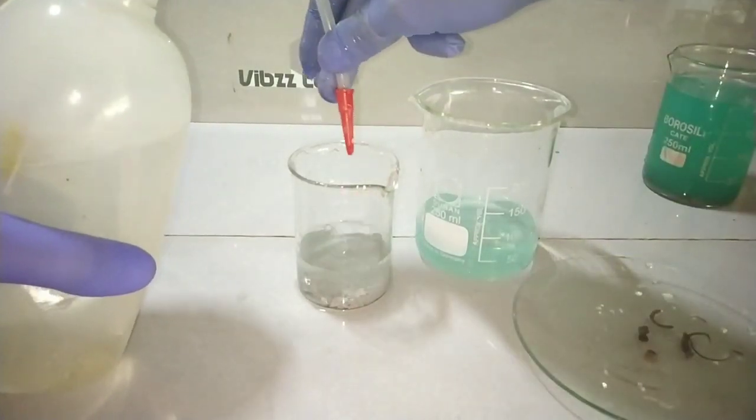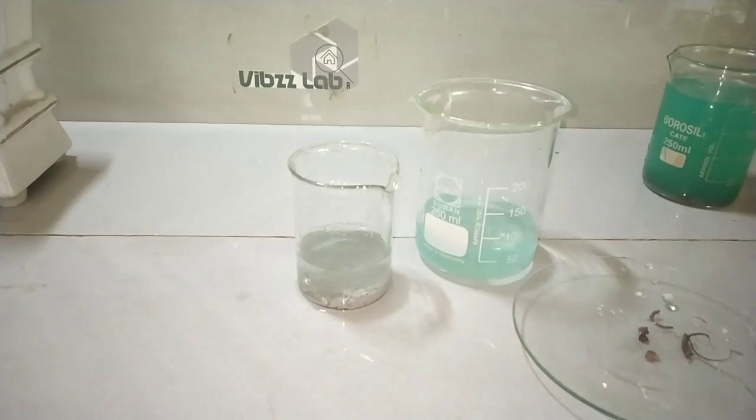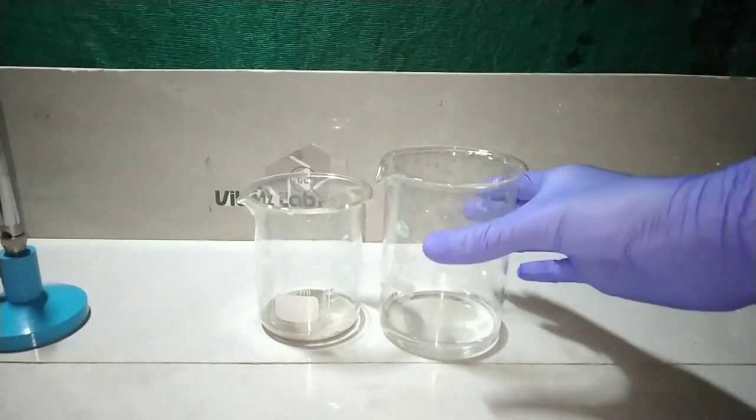After removing all the pieces of copper, I washed the silver precipitate three to four times again with deionized water.